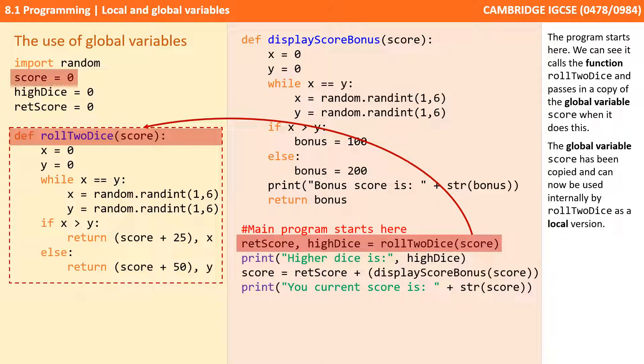So the main program starts under the comment main program starts here. We can see it calls the function roll2dice and passes in a copy of the global variable score when it does this. The global variable score has been copied and is now being used internally by roll2dice as a local version.